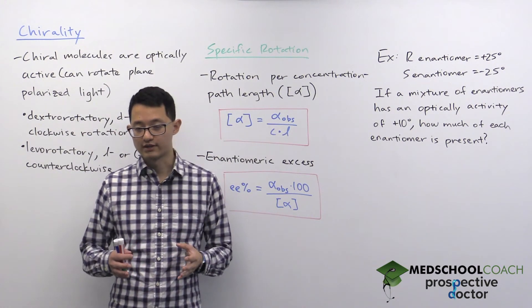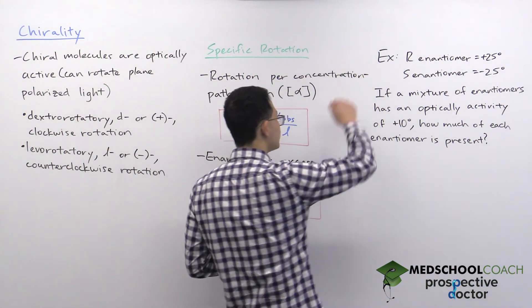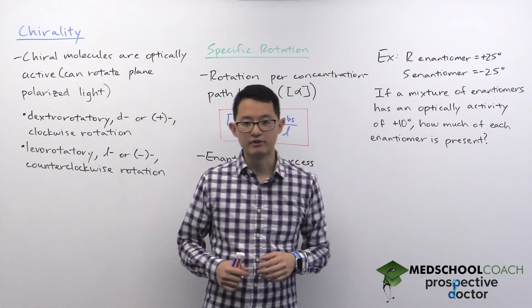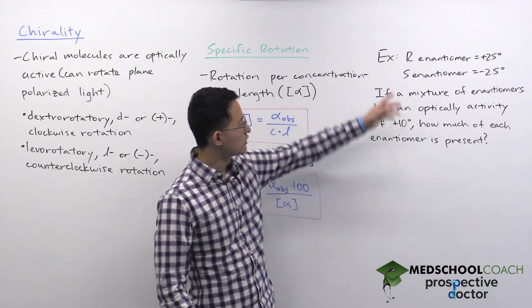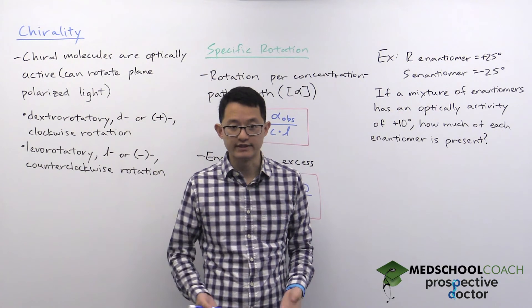To illustrate how this works, let's take a look at an example. In this example we're going to have two enantiomers. The R enantiomer is going to be dextrorotatory, rotating light clockwise by 25 degrees.